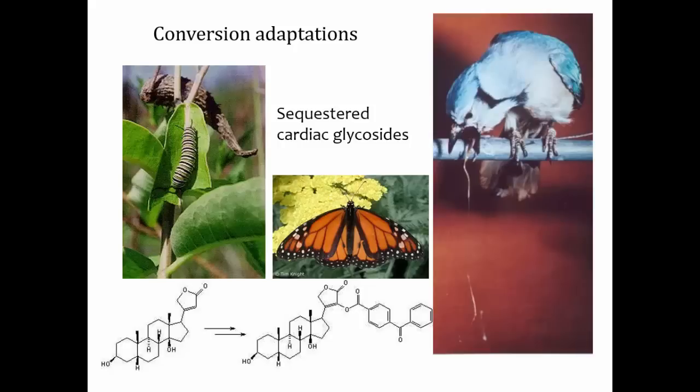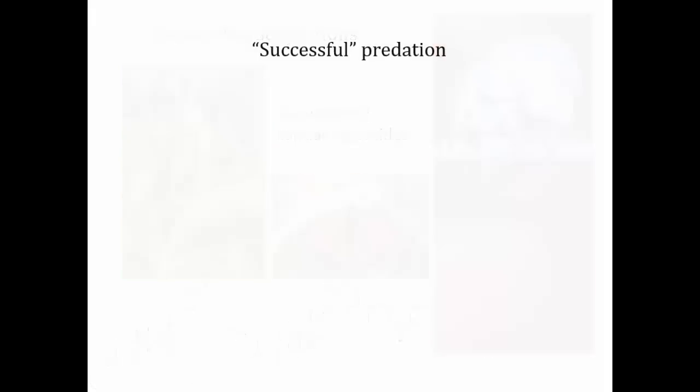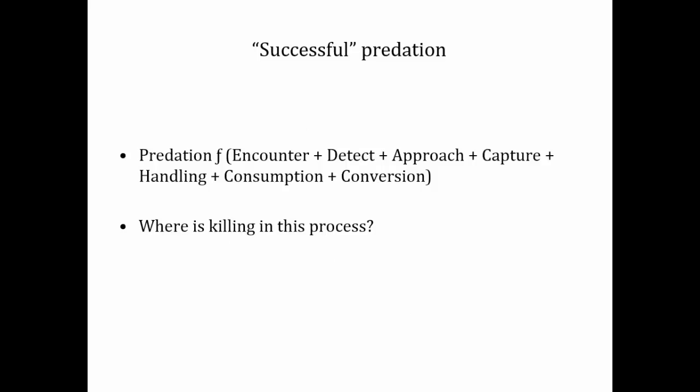Remember the sequence of successful predation from the predator's standpoint: encountering, detecting, approaching, capturing, handling, consumption, and conversion into offspring. We typically think of predation as just killing and eating, but we haven't talked about killing specifically at all — so where do you imagine killing happens, and why doesn't it require a separate step in this equation? You now have enough information to complete your assignment. Look for the instructions on the Moodle page. See you in class.